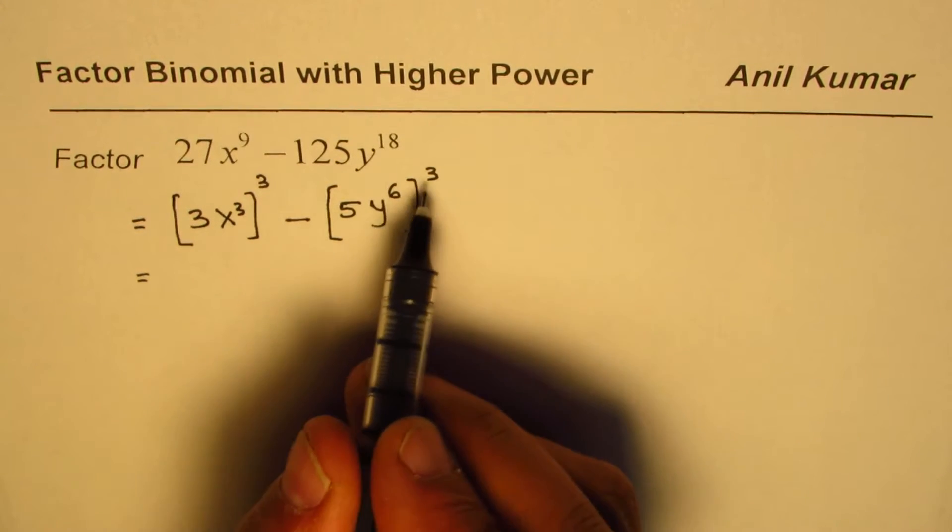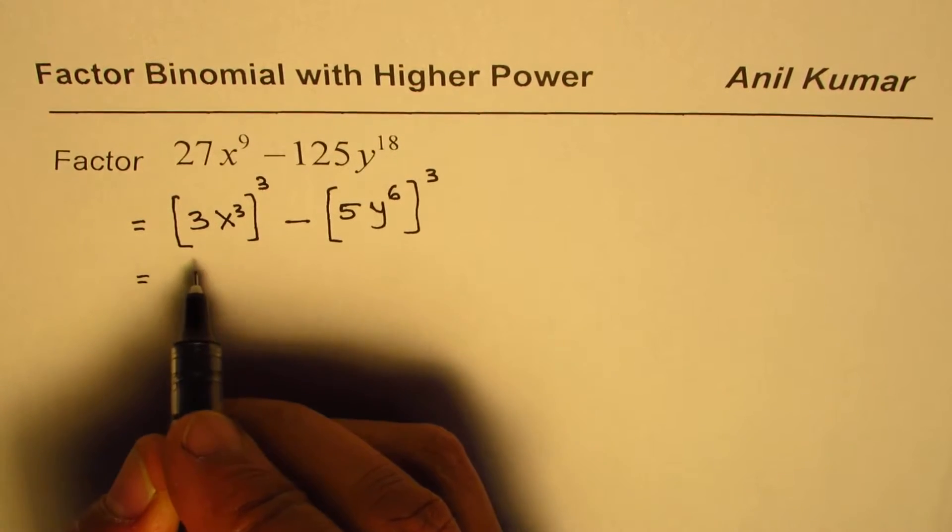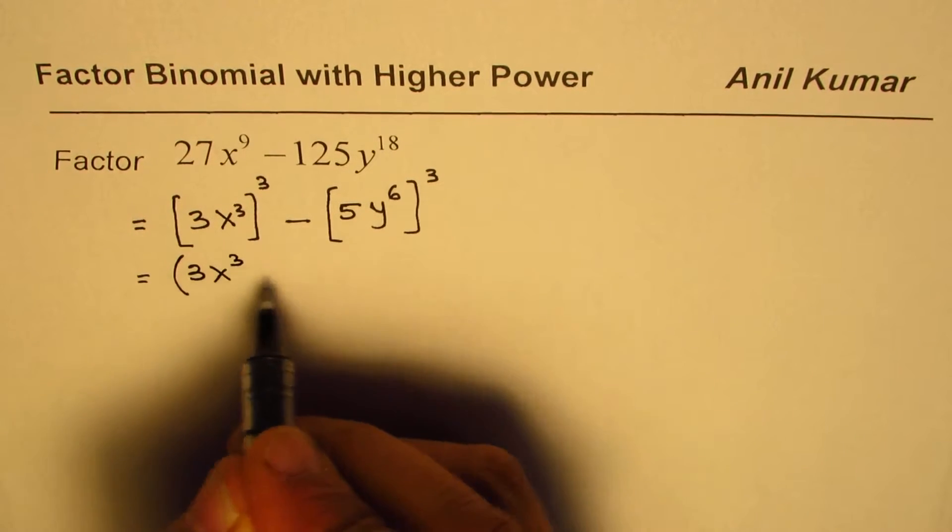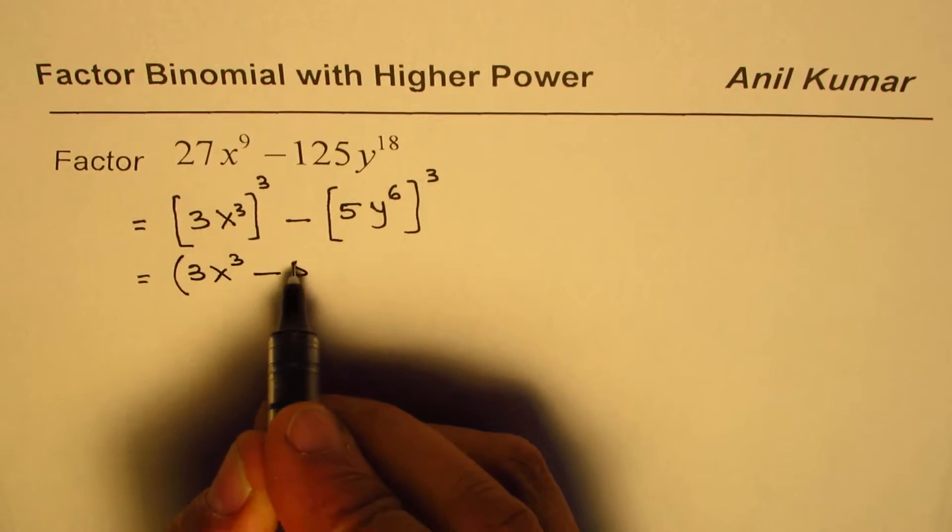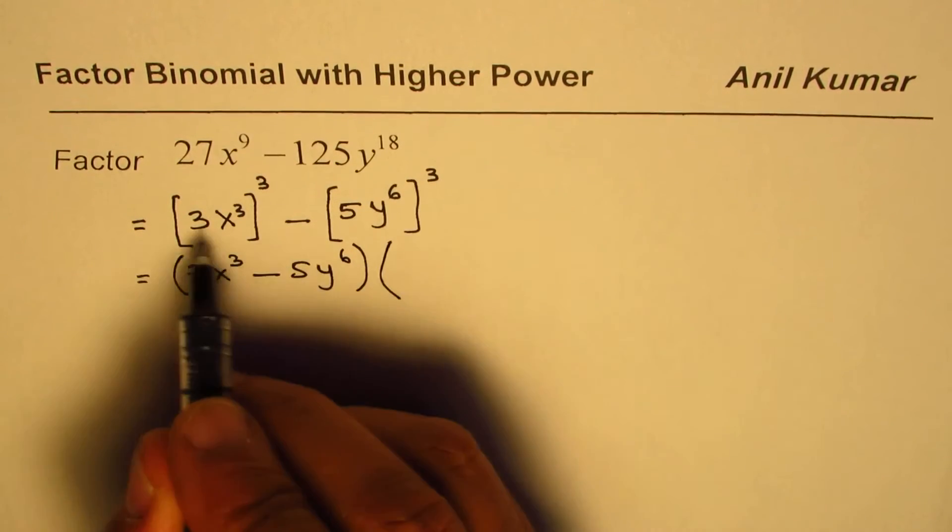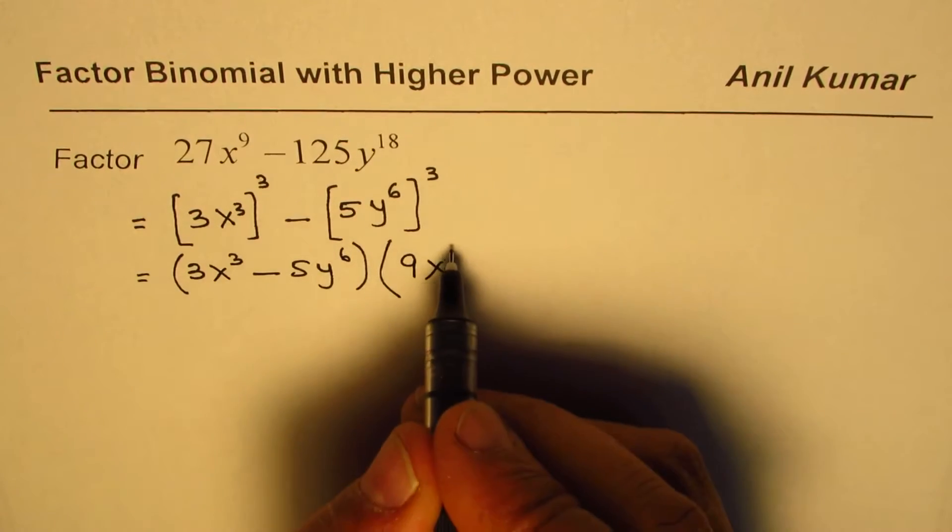That gives us a minus b as the first term. So let me write this as: a is 3x cubed minus b, which for us is 5y to the power of 6, times the square of the first term. The square will be 9x to the power of 6.